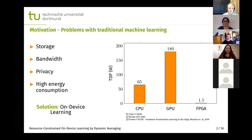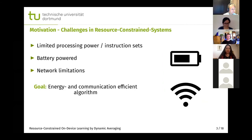Our solution is to apply on-device learning by utilizing efficient processing power, processing the data directly on the edge in order to avoid or at least reduce bandwidth consumption. We have different challenges in those resource-constrained systems, for example limited processing power or limited instruction sets. Often these processors don't have a floating-point unit, and these devices are often battery-powered, so we must be as energy efficient as possible. The goal is to present an energy and communication efficient distributed learning algorithm.